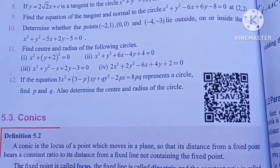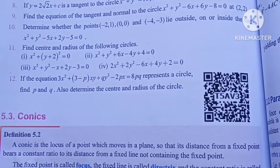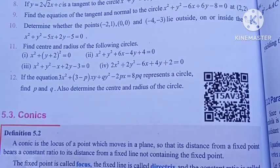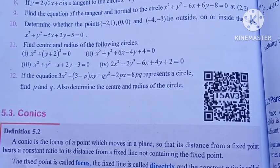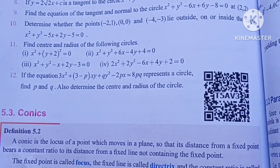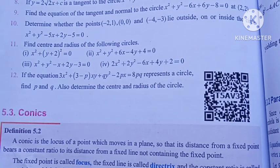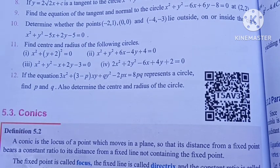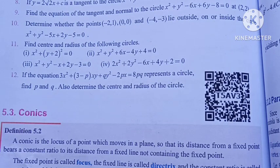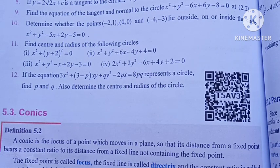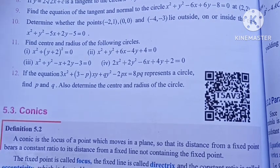Hi students, I am Vino. 12th grade Chapter 5, Exercise 5.1 — let's solve question 12. If the equation 3x² + (3-p)xy + qy² - 2px = 8pq represents a circle, find p and q, and also determine the center and radius of the circle.